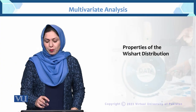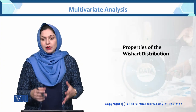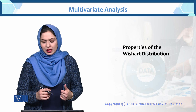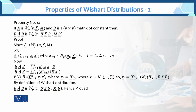Here are the properties of the Wishart distribution. We are discussing some remaining properties. These are the properties of the Wishart distribution. Property number 4 — this is property number 4. What is the property?